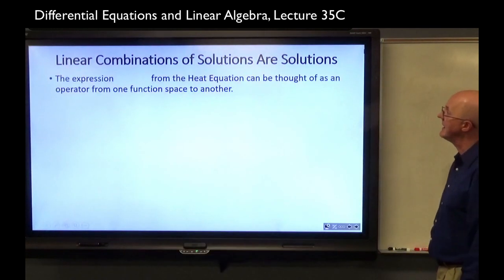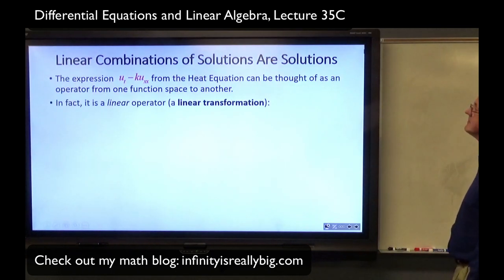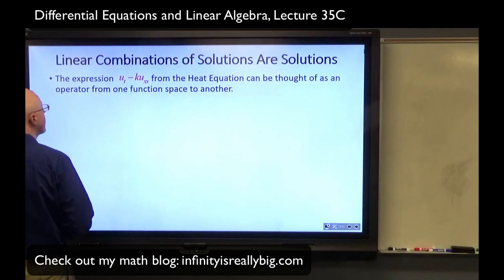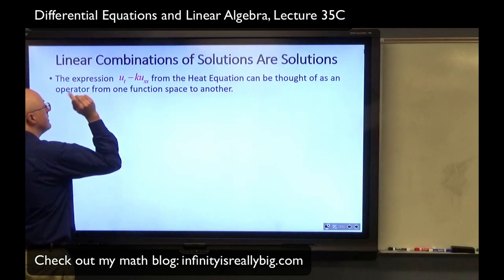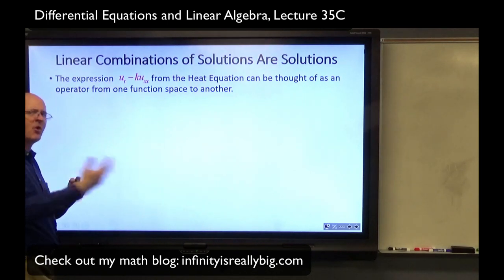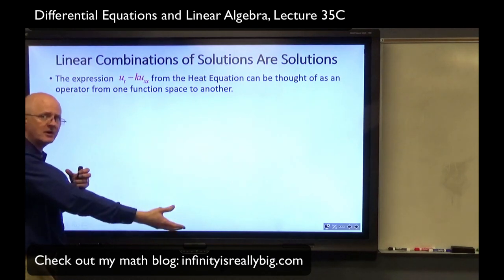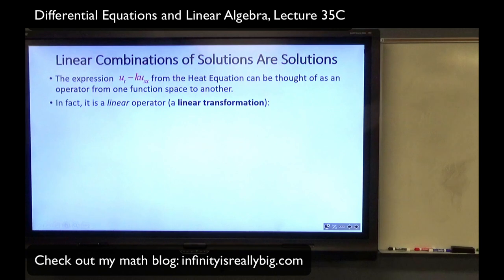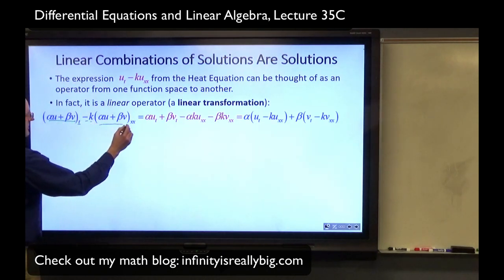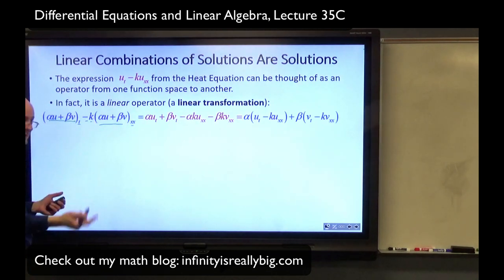Linear combinations of solutions are solutions. That's because this expression can be thought of as a linear operator. It's a transformation from one function space to another. What does that mean? It means take an arbitrary function of two variables, T and X, that's twice continuously differentiable. Find its derivative with respect to T, subtract K times its second derivative with respect to X. Form that combination. That process gives you a new function. That process of taking the original function and giving you a new function is a transformation between function spaces and it is a linear transformation, a linear operator. Why? Here's a verification of it.